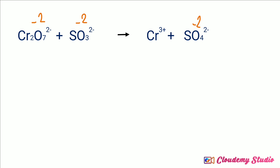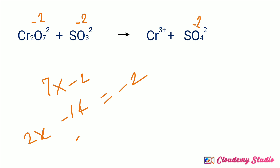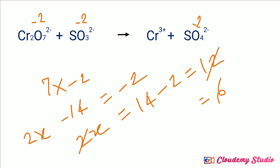For the first ion, Cr2O7 2 minus, we need to assign chromium's oxidation number. Oxygen's oxidation number is minus 2, and there are 7 oxygen atoms, so 7 times minus 2 equals minus 14. So 2x minus 14 equals minus 2, giving 2x equals 12, therefore x equals plus 6. Chromium's oxidation number is plus 6.